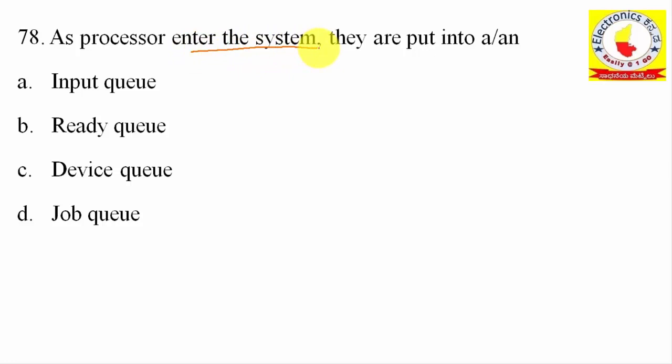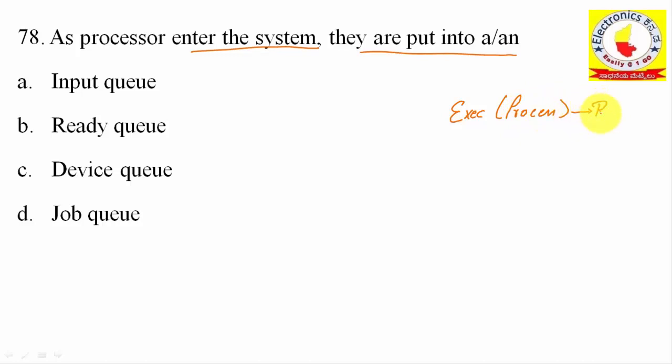78th question: As processes enter the system, they are put into — what? When a process needs to execute, it requires some resources. When the process enters the system, it will not be executed immediately. So it will be under the job queue.